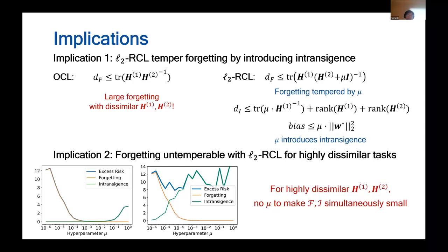The second implication is that while the regularization is powerful in dealing with moderately dissimilar two tasks to achieve a sweet spot in forgetting and intransience, shown in the first graph here, it is not that powerful.